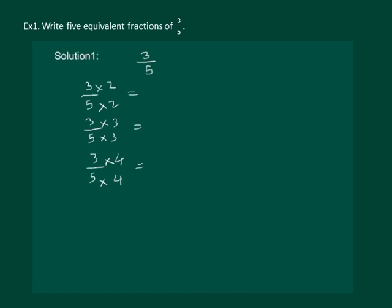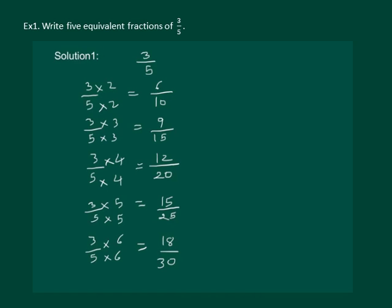So let us take the simplest ones and we can get the equivalent fractions. The multiples are the equivalent fractions of 3 by 5. And we can write 3 by 5 equal to 6 by 10 equal to 9 by 15 equal to 12 by 20, which is equal to 15 by 25 and 18 by 30.